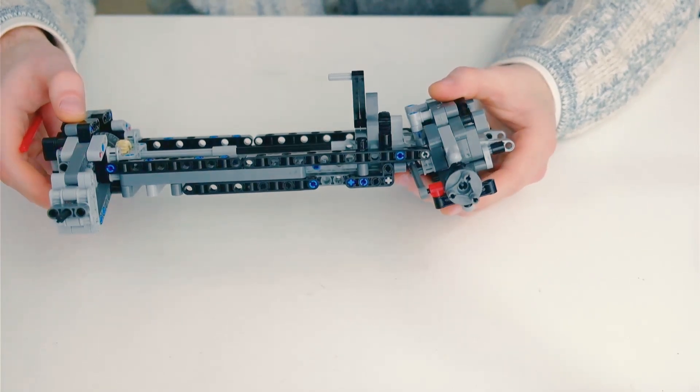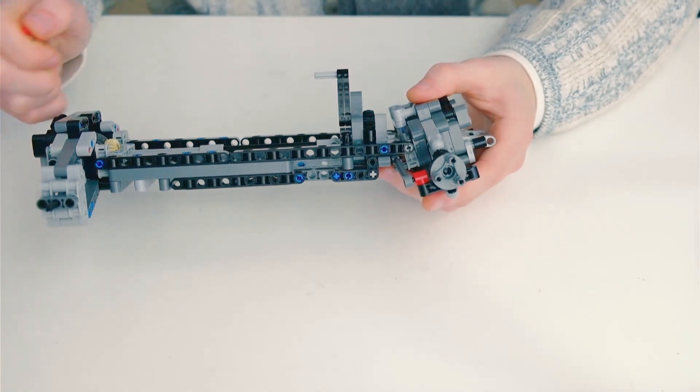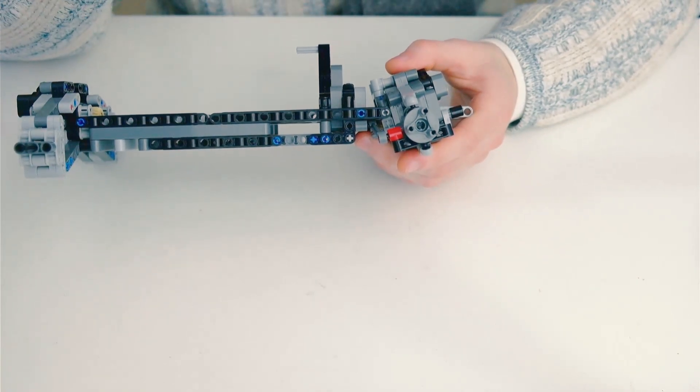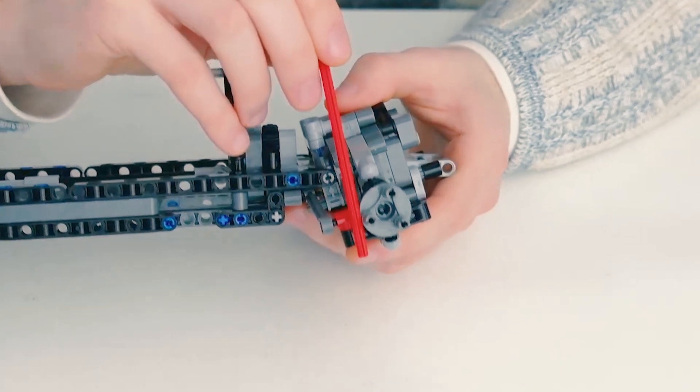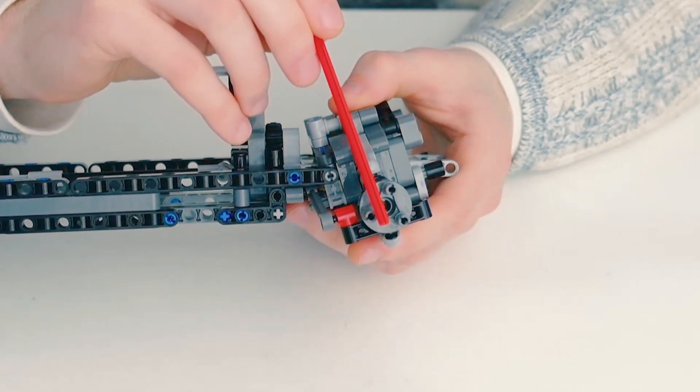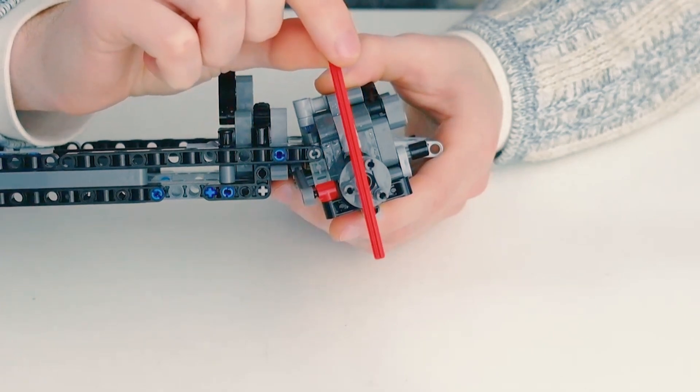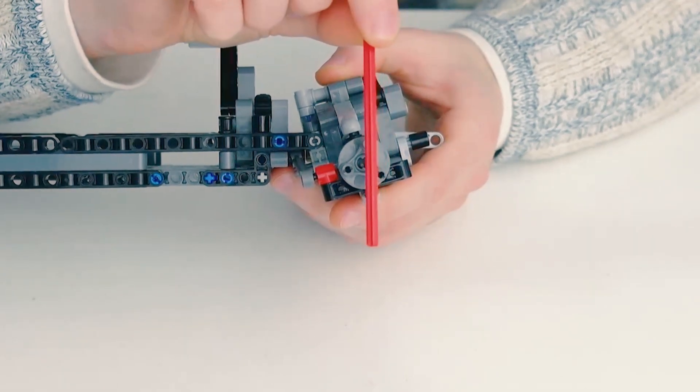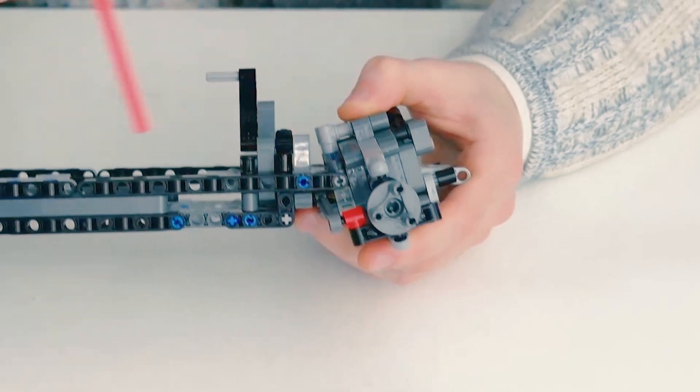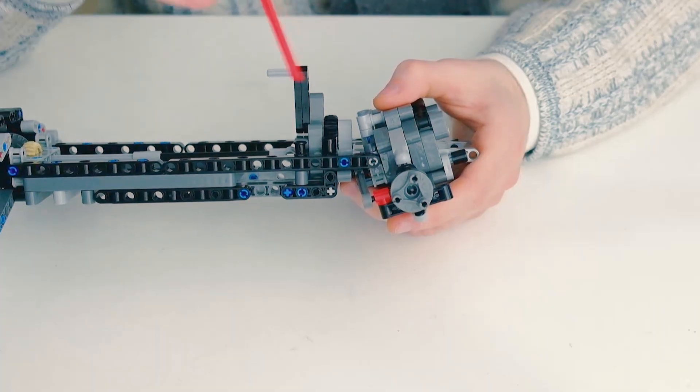Caster angle is generally—if you take a line that goes between two ball joints that you typically find in a Lego double wishbone setup and you draw a line through it, the angle of that line from the vertical, which would be kind of like something like that, that's the caster angle.